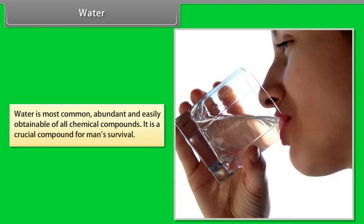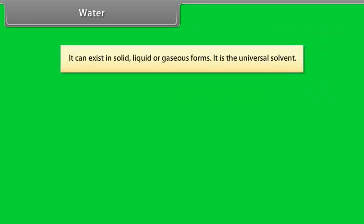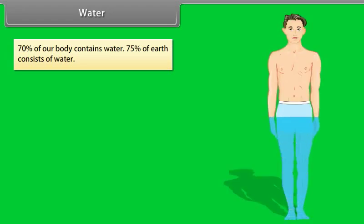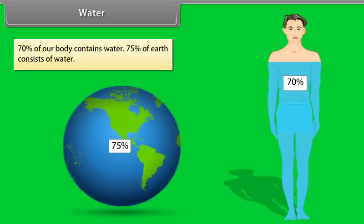Water is most common, abundant, and easily obtainable of all chemical compounds. It is a crucial compound for man's survival. It can exist in solid, liquid, or gaseous forms. It is the universal solvent. 70% of our body contains water, and 75% of earth consists of water.